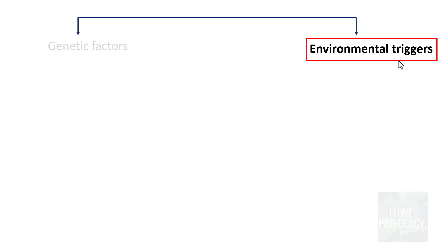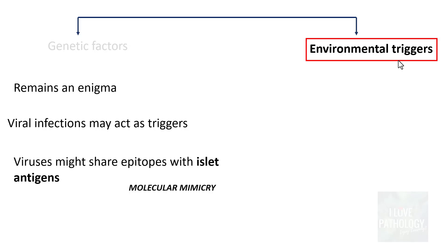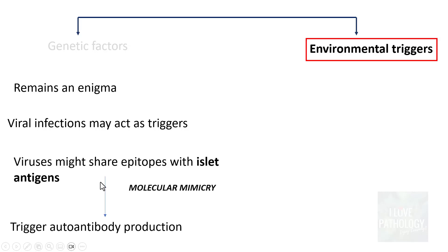Now let us look into the environmental triggers which can result in diabetes mellitus. Even though we say environmental triggers play a major role in pathogenesis, it still remains an enigma. Viral infections often act as triggers for development of diabetes mellitus because the viruses might share epitopes with the islet antigens — what we know as molecular mimicry. This can result in triggering of autoantibody production against the islets.